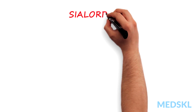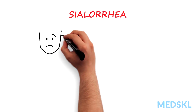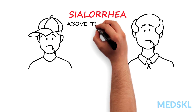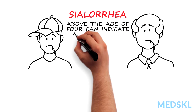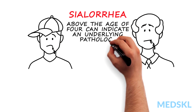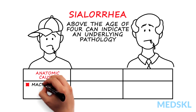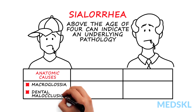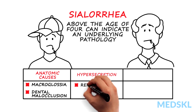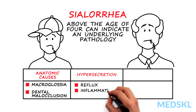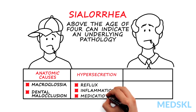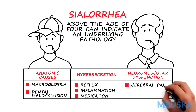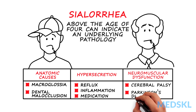Excessive salivation in patients above the age of 4 can indicate underlying pathology. These include anatomic causes such as macroglossia and dental malocclusion, hypersecretion secondary to reflux, inflammation or medication, or neuromuscular dysfunction such as cerebral palsy or Parkinson's disease.